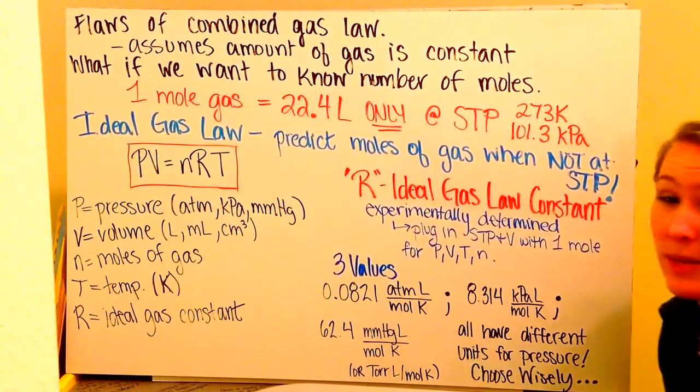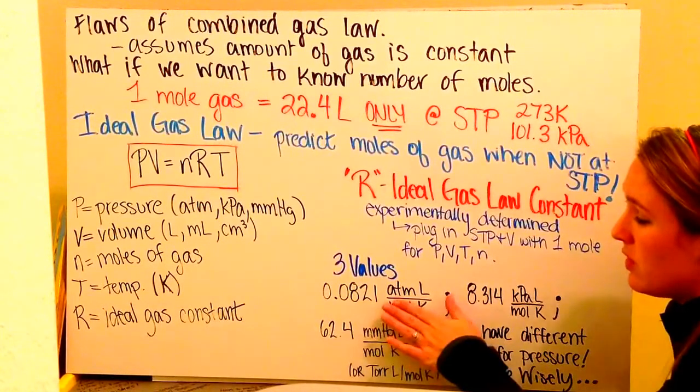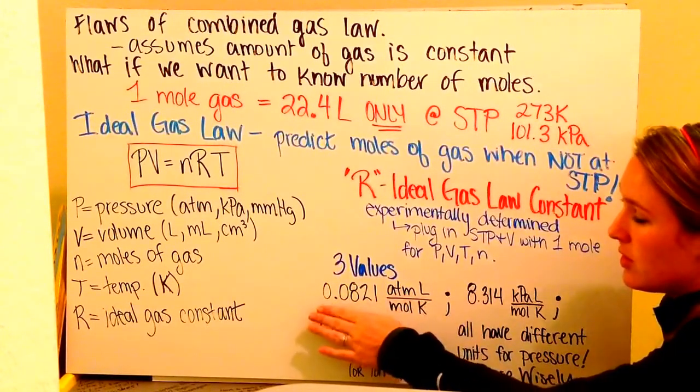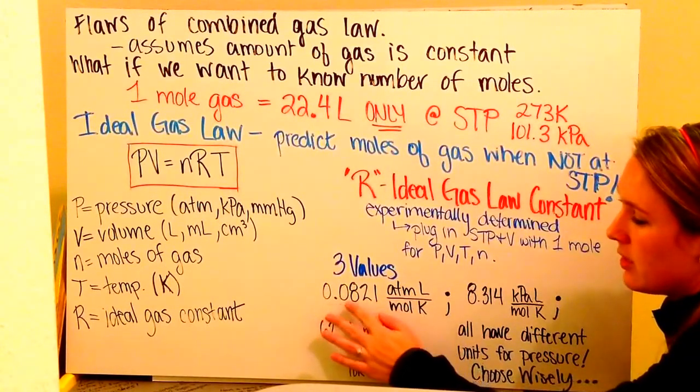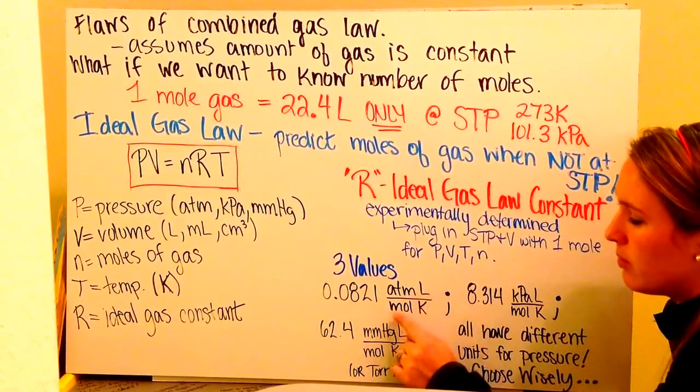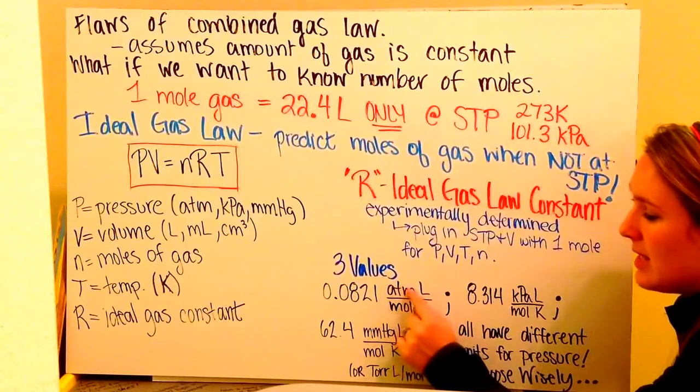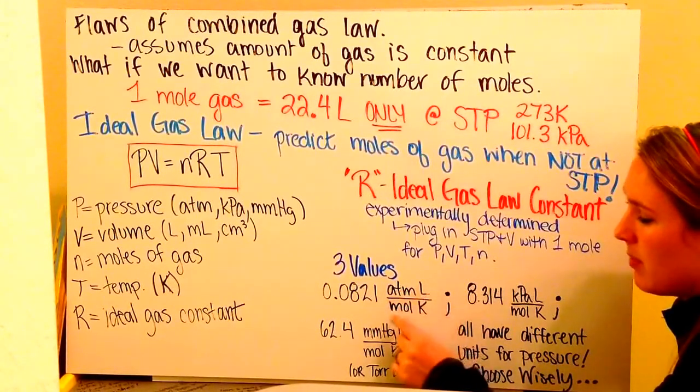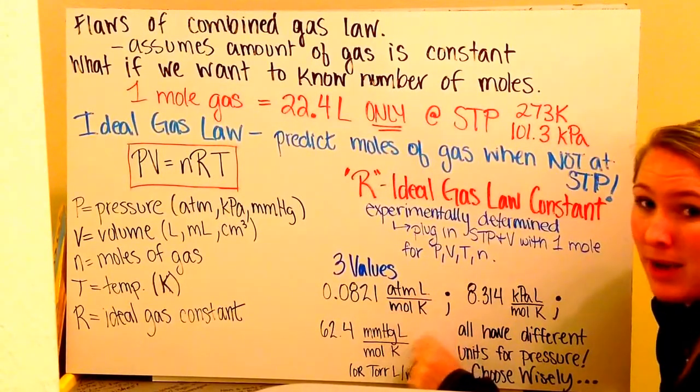You should have been able to determine that if you have the units of atmospheres, your R-value is 0.0821 atmosphere liters per mole Kelvin. So, ATM liters is on the top, mole Kelvin is on the bottom. It's a fraction.